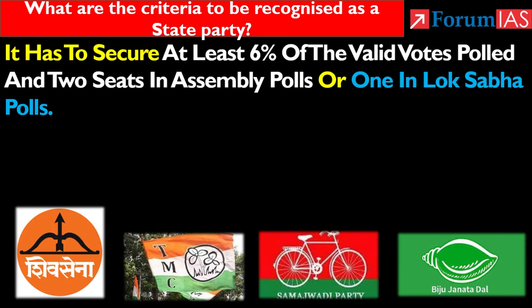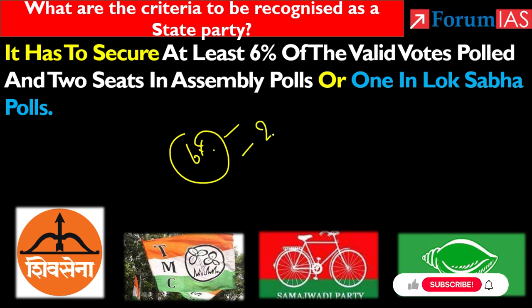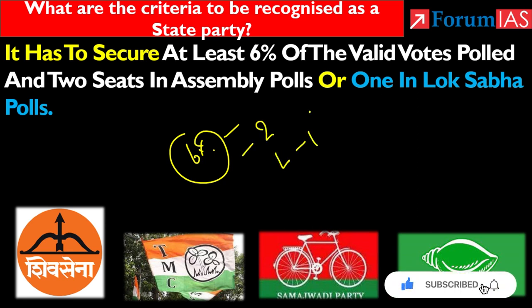Third condition ke form mein recognize hone ke liye at least total poll mein se 6% vote achieve karna hota hai — means jitna bhi state mein poll hua usmein se kam se kam 6% vote achieve karna hota hai — and state assembly mein two seats aur Lok Sabha election mein one seat win karna hota hai.